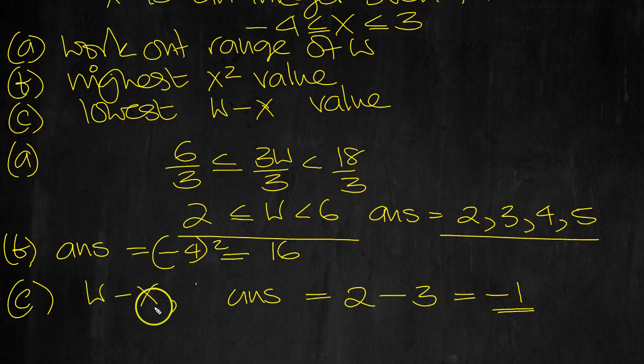So this value would be lowest when this value is smallest and the takeaway. So this value needs to be biggest. This is lowest at 2. This is biggest at 3. 2 minus 3 is minus 1.